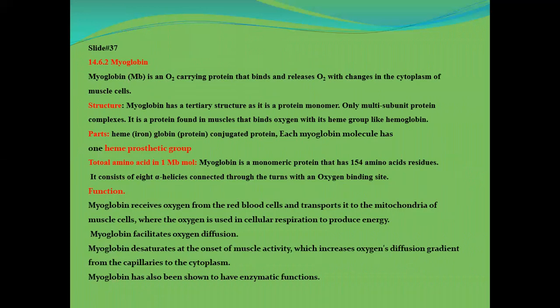Myoglobin is an oxygen-carrying protein that binds and releases oxygen with changes in the cytoplasm of the muscle cell. Myoglobin has a tertiary structure and is a protein monomer, unlike multi-subunit protein complexes. It is found in muscle and binds oxygen with its heme part like hemoglobin. It is a conjugated protein and each myoglobin molecule has one heme prosthetic group. Hemoglobin is tetrameric; myoglobin is monomeric.